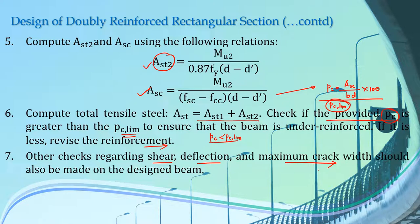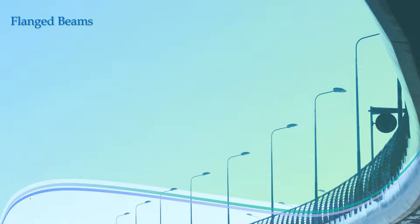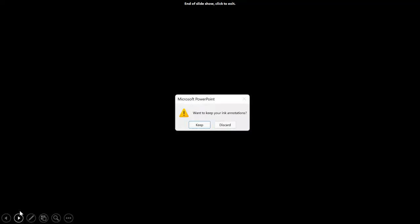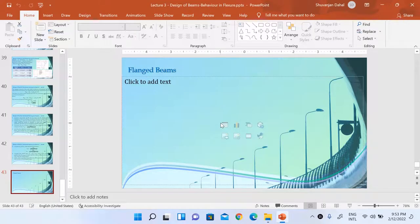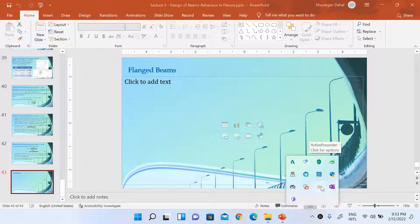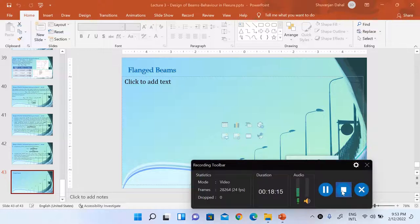This is about the design of doubly reinforced rectangular section. After the end of this lecture we will have two to three tutorial classes, and after the completion of those tutorial classes we will begin with the analysis and design of flanged beams. This brings us to the end of today's class. We will meet again soon in our next video. Thank you.